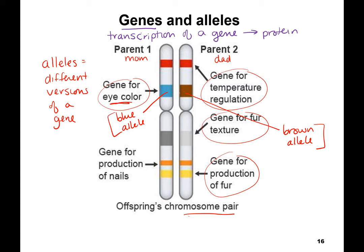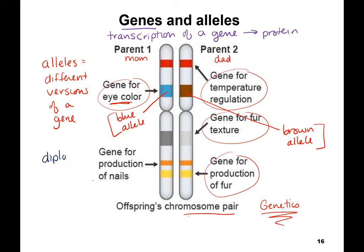Sometimes these alleles might be the same, and a lot of times the alleles are different. Remember that you are diploid, which means you have two copies of every gene — two copies of every gene for eye color, hair color, hair texture, skin color, and every gene needed to produce liver cells and muscle cells. That's where diploid really comes in.